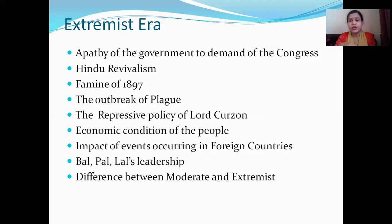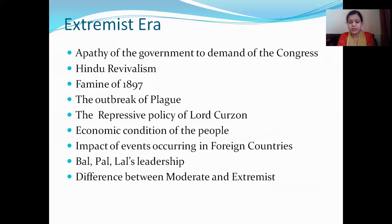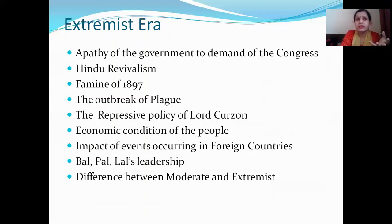The famine of 1897, the outbreak of various British policies, and the very poor economic condition of the people were also causes. The drain theory — the British looting India — was another cause for the rise of extremism. The Lal-Bal-Pal leadership gave strength to the extremist movement. The key difference is that moderates wanted justice from the British government and had faith in them, while extremists believed in self-rule, Swaraj, and their own strength.